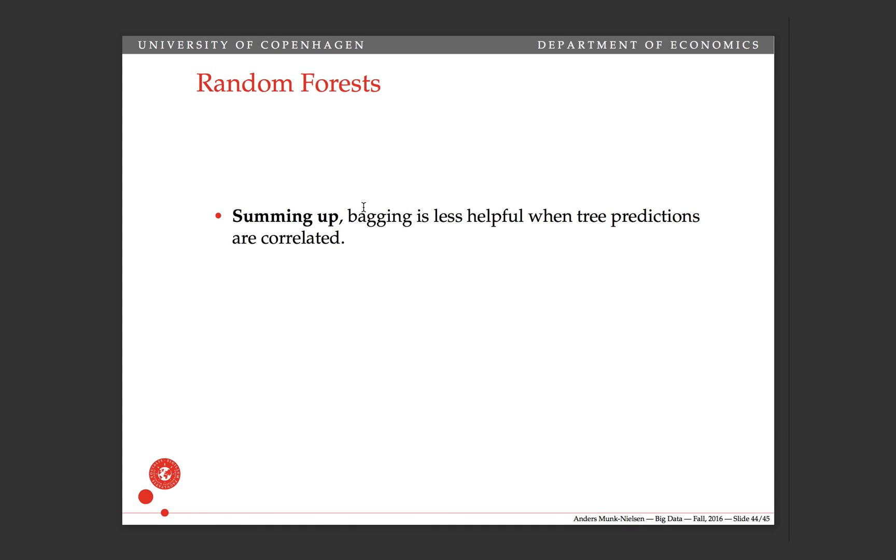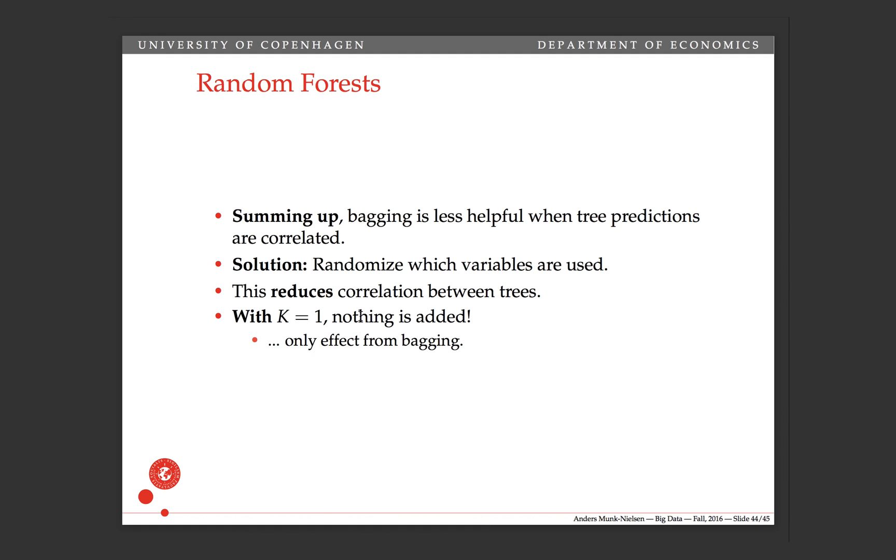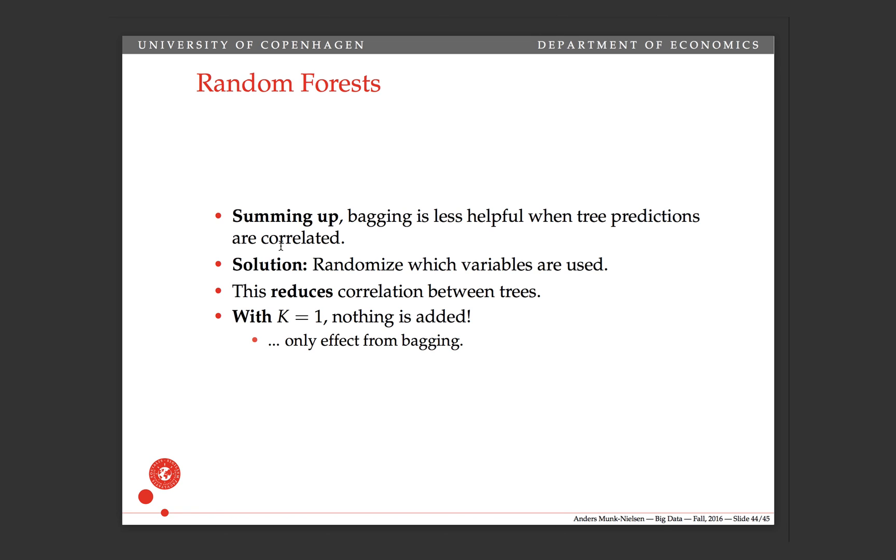To sum up, bagging is less helpful when tree predictions are correlated. So when the individual regression trees have correlated predictions. And the solution, which is the final ingredient in making a random forest, is to randomize which variables are used in which regression trees. That's obviously going to reduce the correlation between different regression trees because they no longer use the same variables to form their predictions. And note that when k is equal to 1, when there's just one variable, this step doesn't add anything. So we only have the effect of the bagging, but there's no extra step from this.